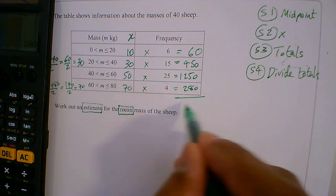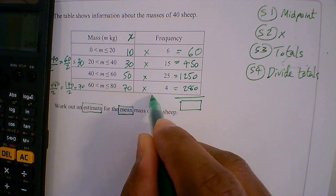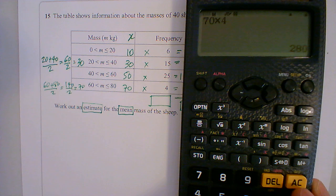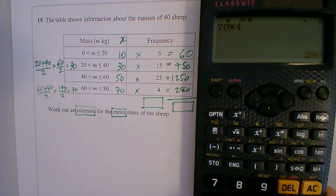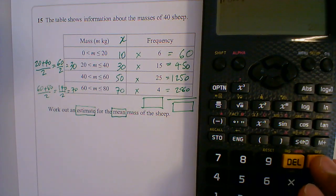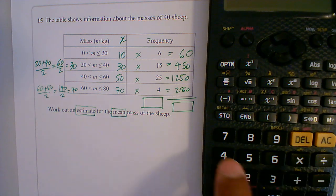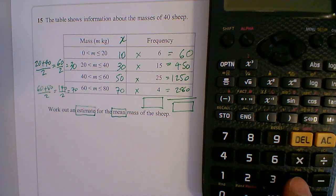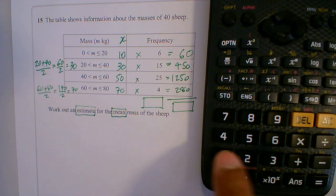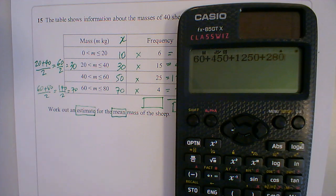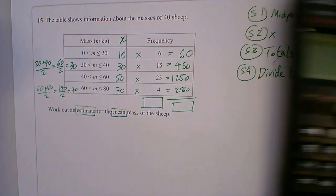And now I work out the total here, and the total frequency there. So when I add these together, I have 60 plus 450 plus 1250 plus 280, gives me 2040.